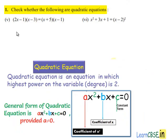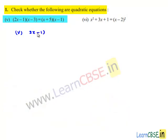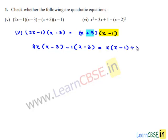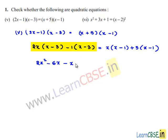Now coming to the fifth bit, which is (2x minus 1)(x minus 3) equals (x plus 5)(x minus 1). On the left hand side, expanding: 2x times x is 2x squared, 2x times minus 3 is minus 6x, minus 1 times x is minus x, and minus 1 times minus 3 is plus 3. On the right hand side, expanding: x times x is x squared, x times minus 1 is minus x, 5 times x is 5x, 5 times minus 1 is minus 5.